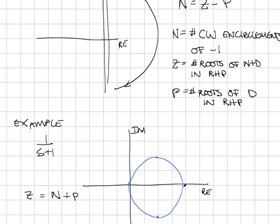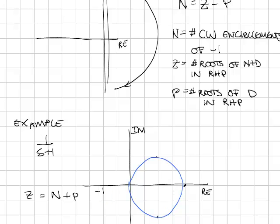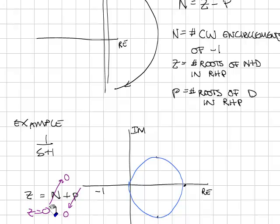Here's a simple example. The transfer function is 1 over S plus 1, and I want to know what happens when I put this in closed-loop feedback. From experience with Bode plots and root locus, the system should not be unstable. The Nyquist diagram confirms this: mapping through the contour gives the blue curve. The minus 1 point has no encirclements, so N equals 0. P equals 0 since the open-loop system has no right half plane poles. Therefore Z equals 0, indicating no unstable poles in the closed-loop system.